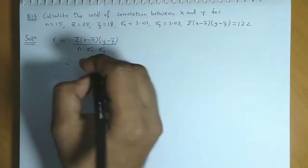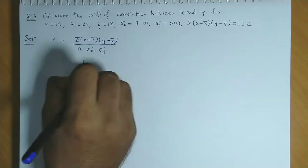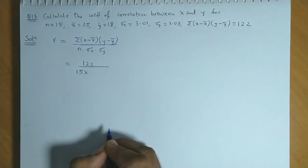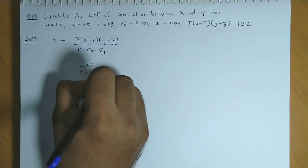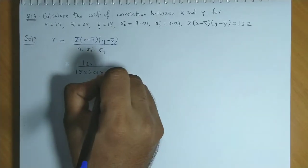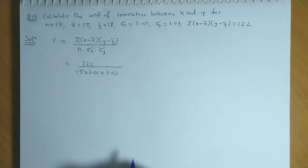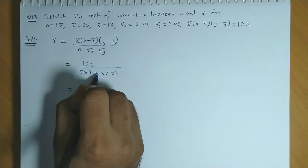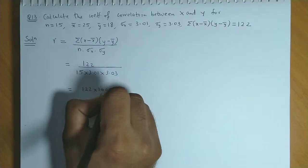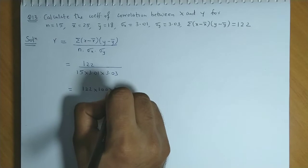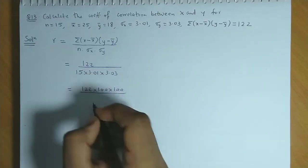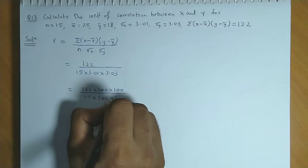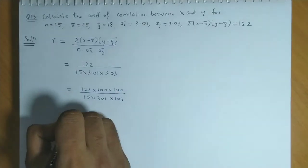The numerator value is 122. In the denominator n is 15, standard deviation of x is 3.01 and standard deviation of y is 3.03. If we remove the decimal places from the denominator, we'll have 100 here and 100 here as well.